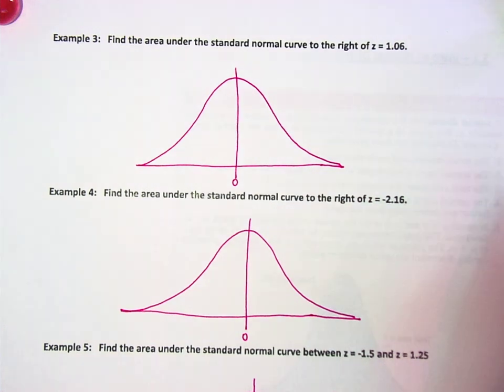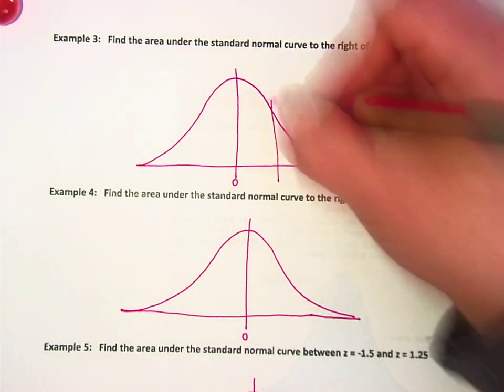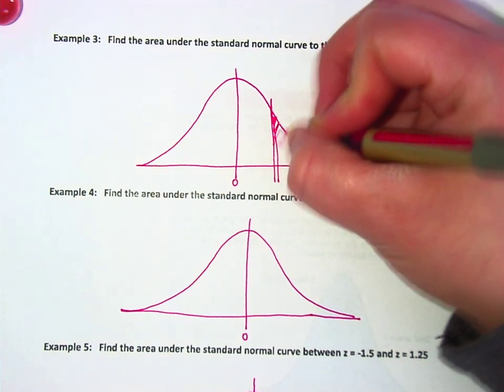In that case, anytime you're doing a story problem I'd always draw it just because it's high stakes and there's only five of them, so why not. Alright, 1.06 is about, I don't know, here maybe, and this time you're shading to the right.